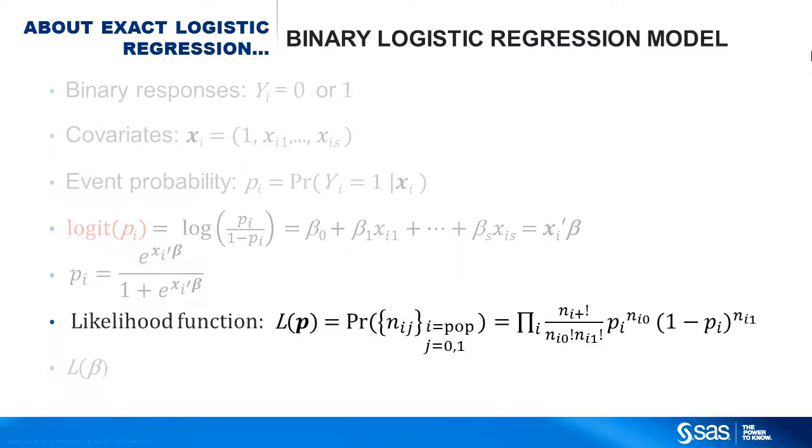For an unconditional logistic regression, you set up a likelihood function, which measures how likely your data is to come from a model. This is a product binomial. For each event, you multiply by p sub i, and for each non-event, you multiply by 1 minus p sub i.